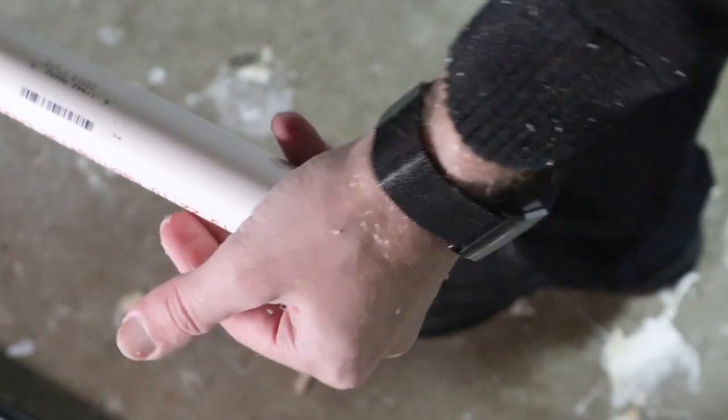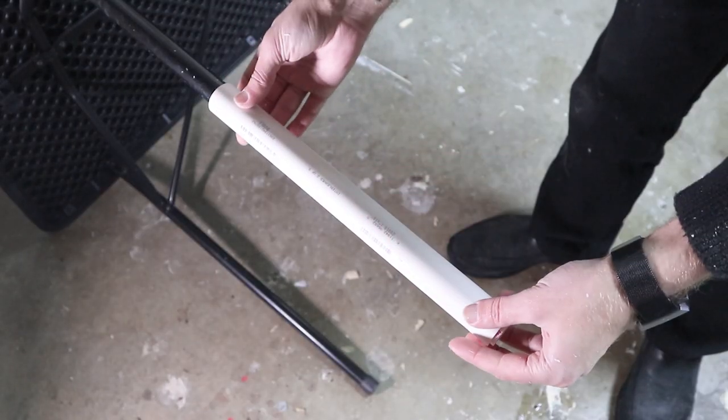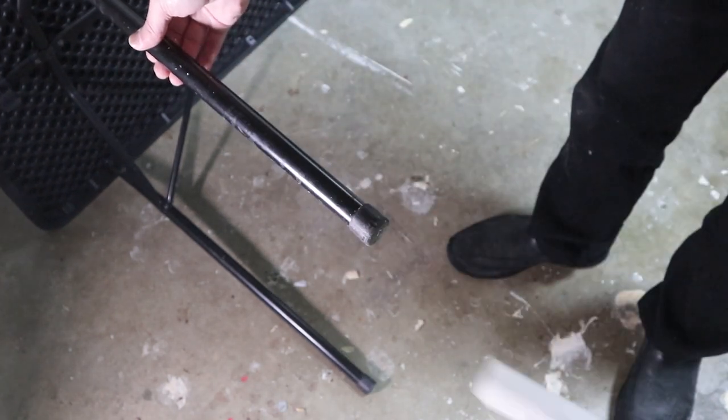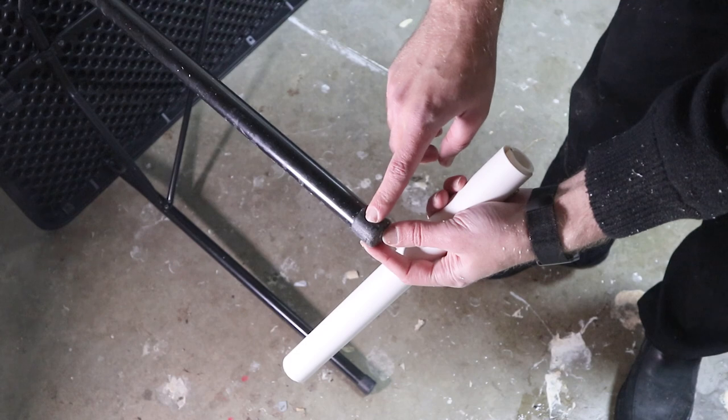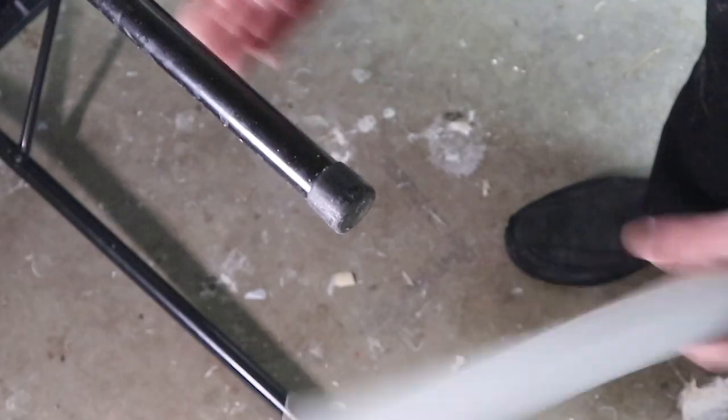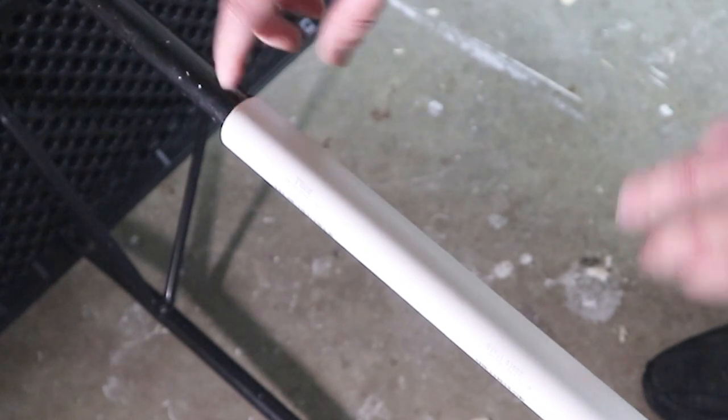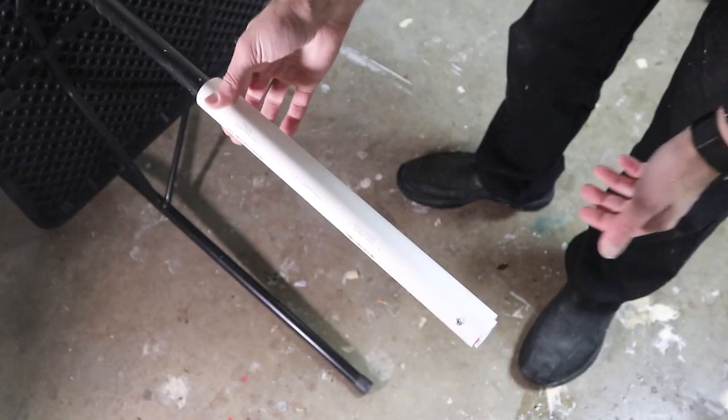That should be good enough. Now depending on the fit of the PVC over your original leg, we could also fire in a couple screws here to keep it on, but this actually has a pretty nice friction fit over the top of this foot here. So I think I'm just gonna leave that as is, that way I don't have to bother trying to drill a hole into the metal and fire a screw in there.